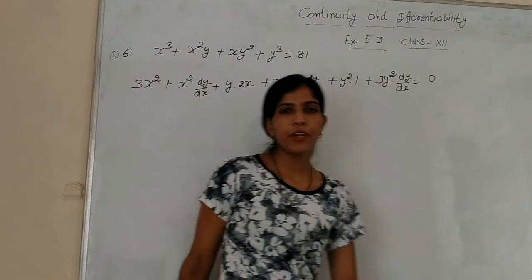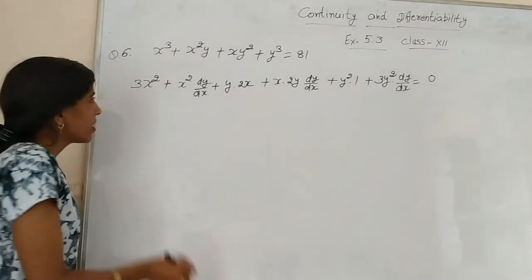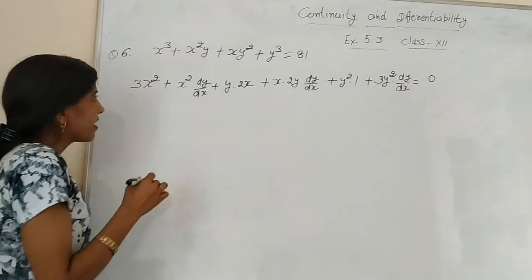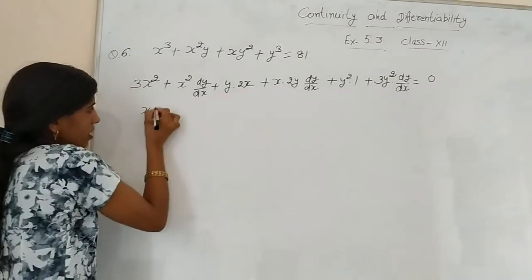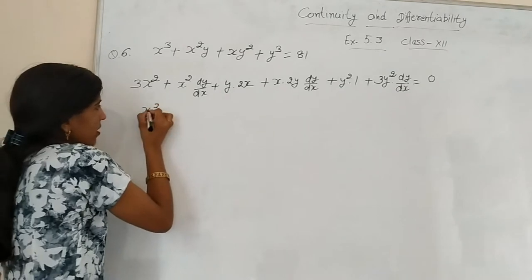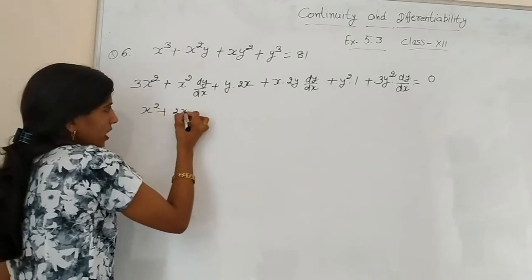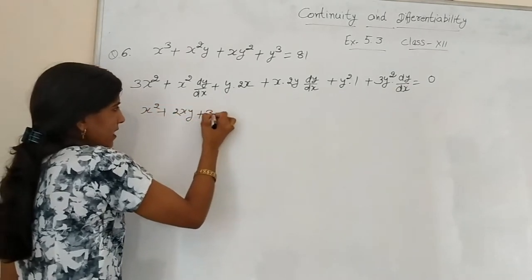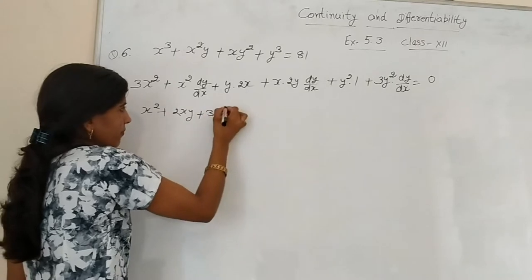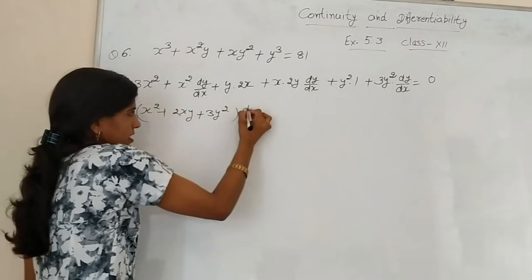Derivative of constant number is 0. Now collect all the dy/dx terms: x² + 2xy + 3y² times dy/dx.